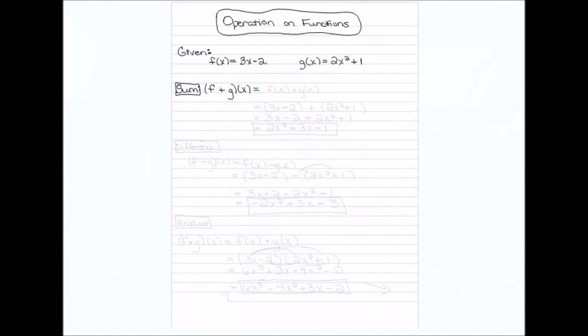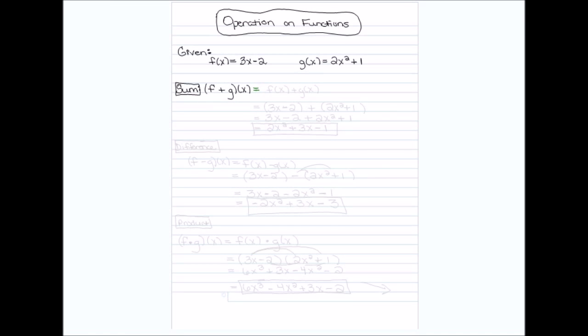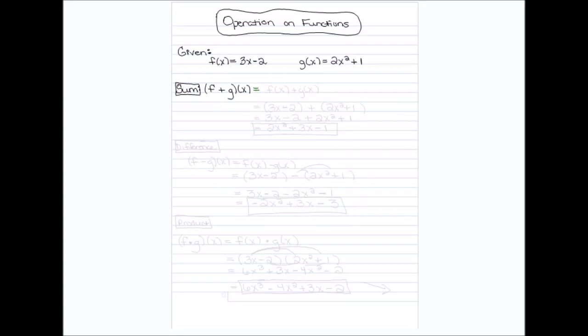Don't worry, I'm not driving — I'm in the passenger seat. What we have here is operations on functions. Please excuse my voice, I am a little hoarse, but I want to get this video out. On the paper, what I have is two functions: f of x is equal to 3x minus 2, and g of x is equal to 2x squared plus 1.